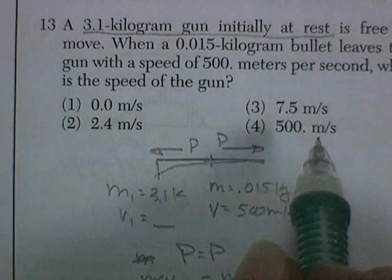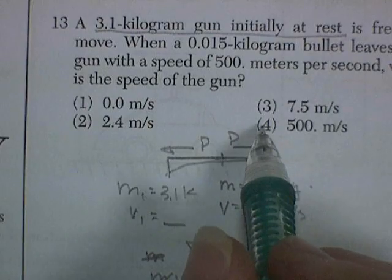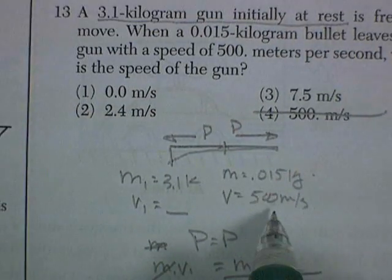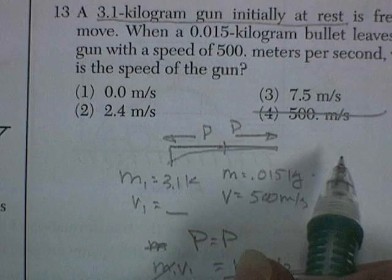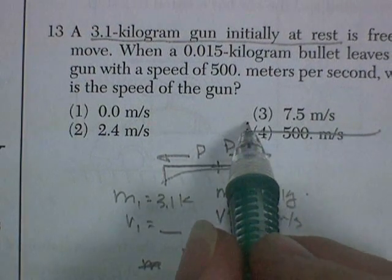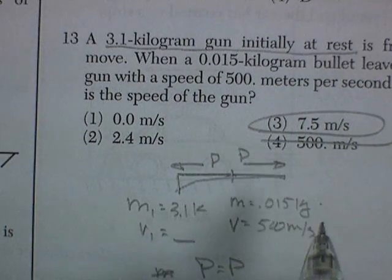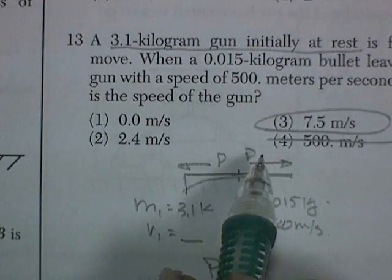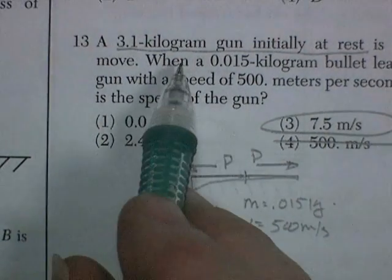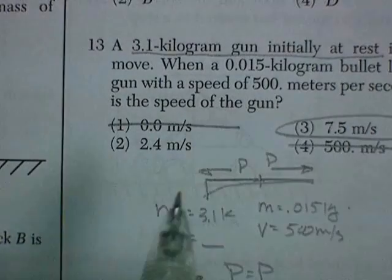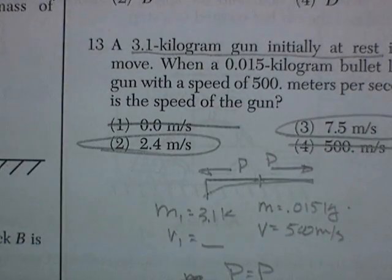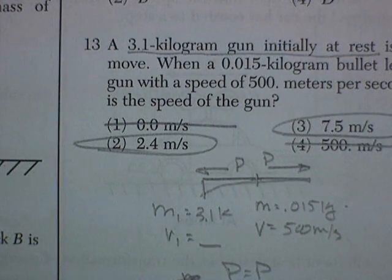Let's look at the answers. The momentum of the gun can't be 500, that was the velocity of the bullet. The momentum of the bullet was 7.5, and so the momentum backwards has to be 7.5. But the mass of the gun is larger, so the velocity's got to be less. But it's not going to be 0. 2.4 meters per second. Another one done.